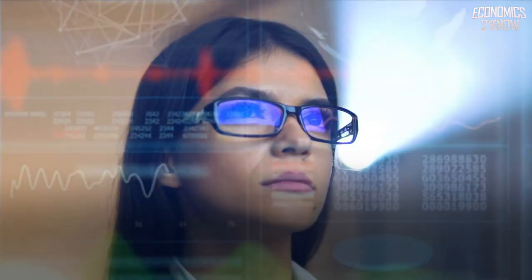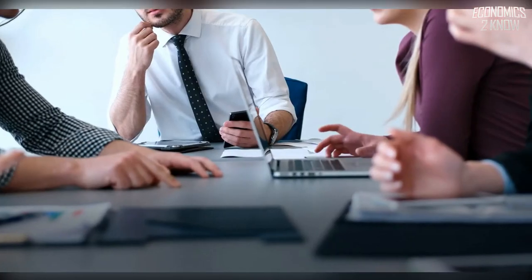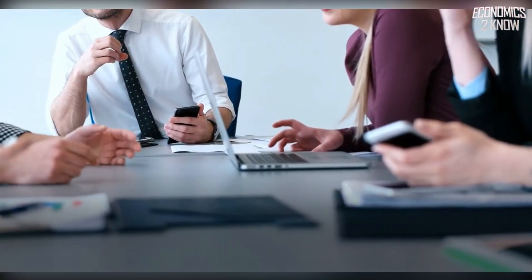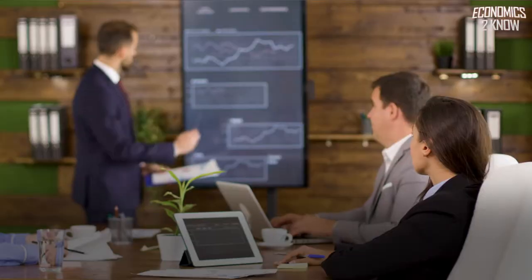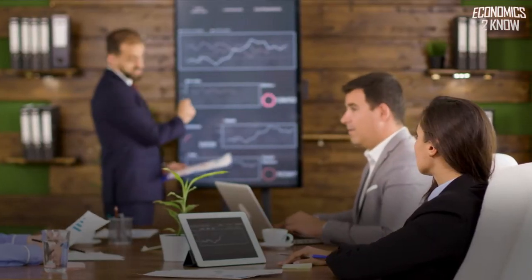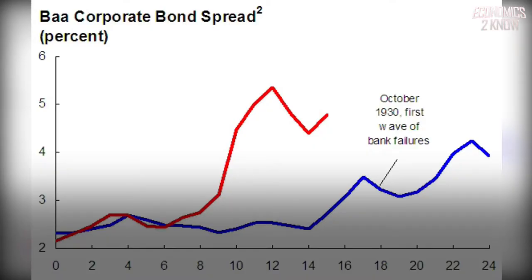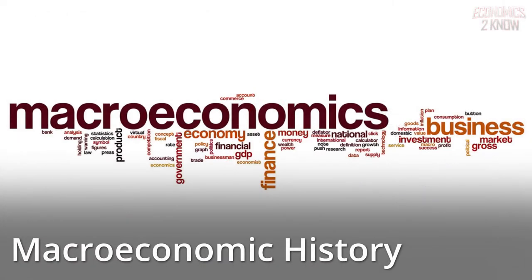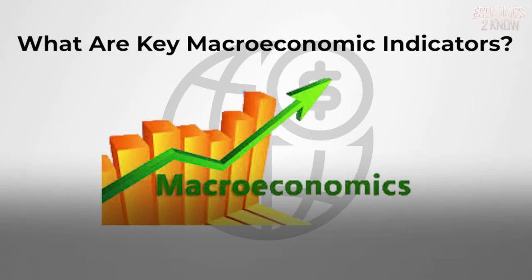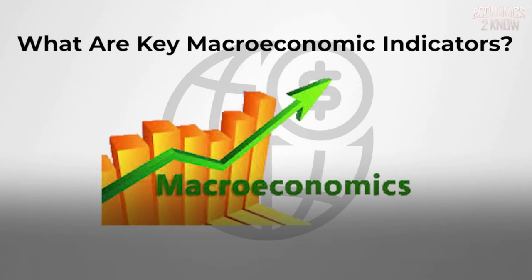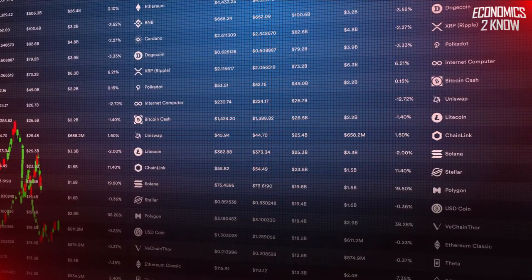The business cycle occurs when important macroeconomic indicators like employment and national output fluctuate up and down, expanding and contracting over long-term macroeconomic growth trends. The 2008 financial crisis is a contemporary example, while the 1930s Great Depression sparked most modern macroeconomic theory.